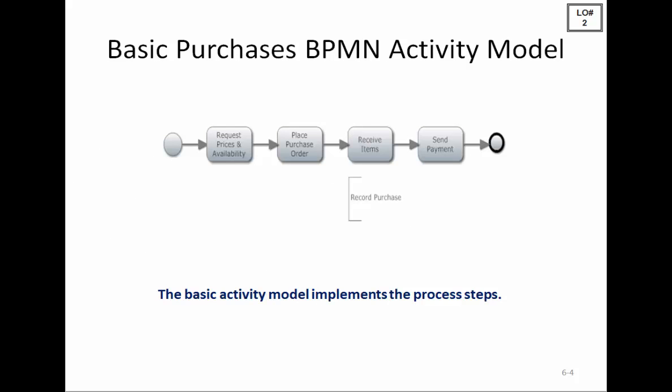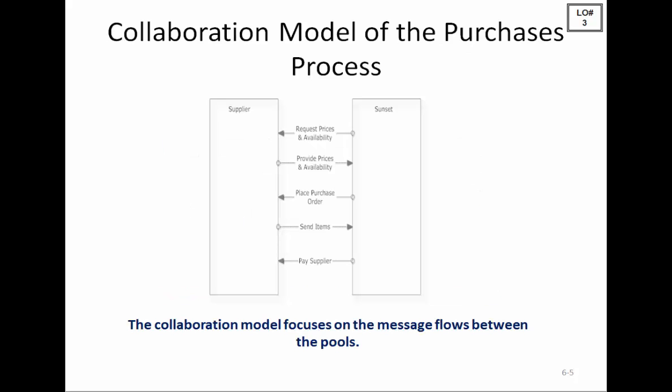Here's a simple BPMN activity model of Sunset Graphics' purchases and payments process. After the start, they request prices and availability, place the purchase order, receive the items and record the purchase, then send payment to the supplier — that's the end of their process. Let's look at an alternative.